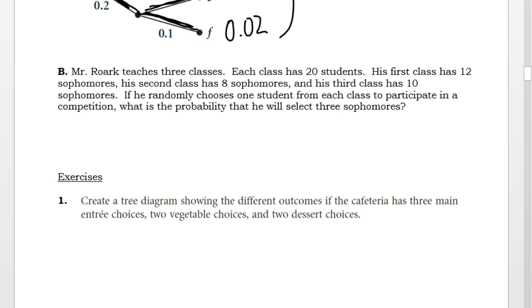The probability that the first hour selects a sophomore is 12 out of 20, because there's 12 sophomores out of 20 students. The probability that second hour selects a sophomore is 8 out of 20.